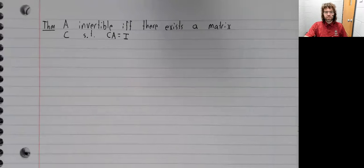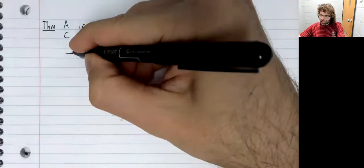A is invertible if and only if there exists some matrix C such that C times A equals I. This theorem's a little interesting.